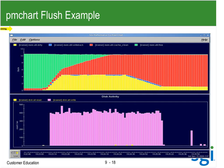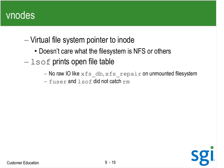Let's move on. V-nodes is a virtual file system pointer - it doesn't care whether it's NFS or something else. There's a command called LSOF that prints your open file table. You have to be careful - this won't show raw I/O for things like XFSDB repair. I've had cases where Fuser and LSOF did not catch RM. In the prior example, if I removed the file and it still had a terabyte of dirty data, the file disk space - the inode may go away, but the disk space is not recovered until the flush is finished.